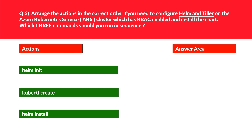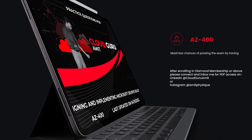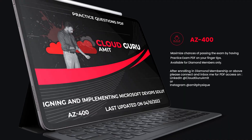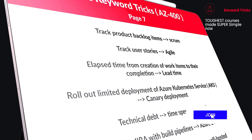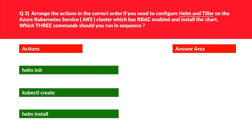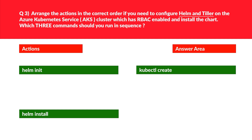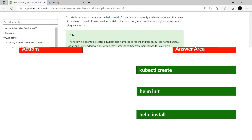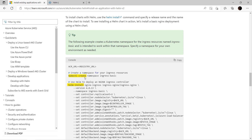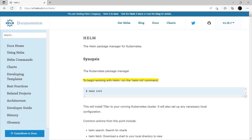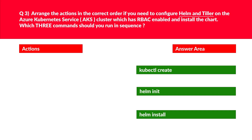The first step would be to create the tiller service and cluster admin role binding, so we need to run the kubectl create command. Next, we need to deploy basic tiller to the Azure Kubernetes Service cluster, so we need to run helm init — because before working with Helm we need to run helm init. As a last step, we would install Helm charts, so we run helm install. The official documentation confirms: kubectl create first, then helm install. And from the Helm official documentation: to begin working with Helm, run the helm init command — so that is step two. We lock these as the correct answer.